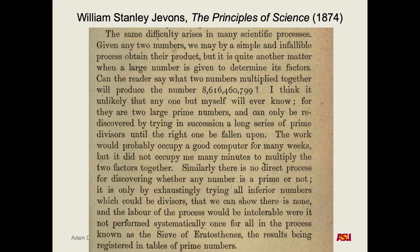'Can the reader say what two numbers multiplied together will produce the number 8,616,460,799? I think it unlikely that anyone but myself will ever know, for there are two large prime numbers, and can only be rediscovered by trying in succession a long series of prime divisors until the right one be fallen upon. The work would probably occupy a good computer for many weeks.' So what is the author talking about here? A person — it's 1874, they're not talking about a computer system, they're talking about a literal human computer who used to do computation by hand.